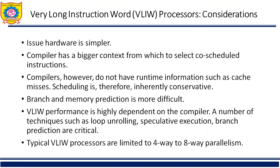What are the considerations of this VLIW processor? Issue hardware is simpler. The compiler has a bigger context from which to select co-scheduled instructions. However, the compiler does not have runtime information such as cache misses. Scheduling is therefore inherently conservative. Branch and memory prediction is more difficult. VLIW performance is highly dependent on the compiler. Techniques such as loop unrolling, speculative execution, and branch prediction are critical. Typical VLIW processors are limited to four-way to eight-way parallelism.